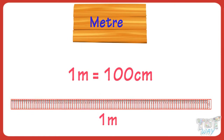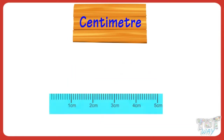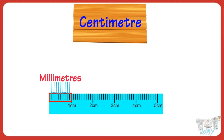1 centimeter is divided into 10 equal parts called millimeters. 1 centimeter equals 10 millimeters.